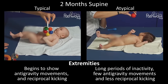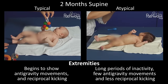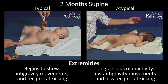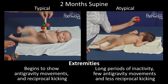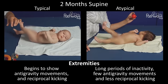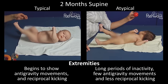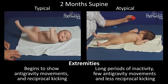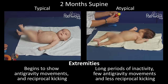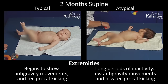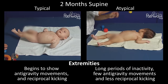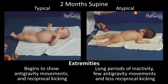Extremities – See how the infant on the left begins to show extremity anti-gravity movements and reciprocal kicking, while the atypically developing baby on the right has long periods of inactivity, few anti-gravity movements, and less reciprocal kicking.